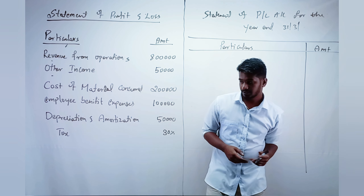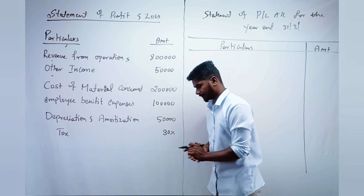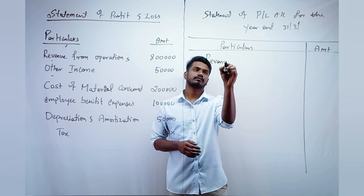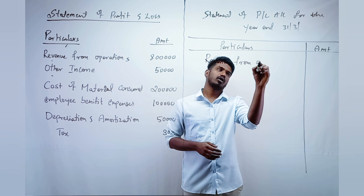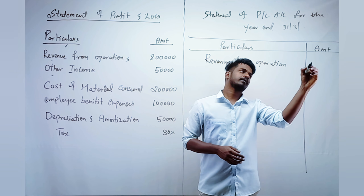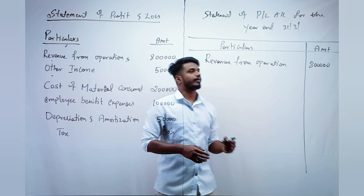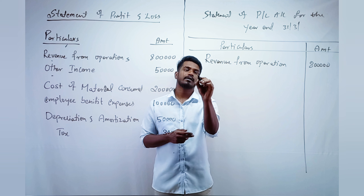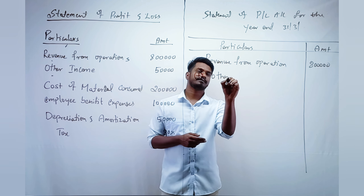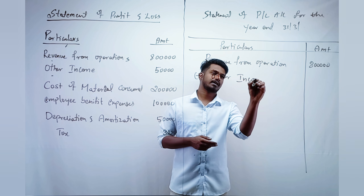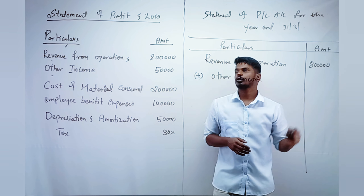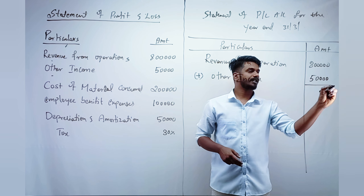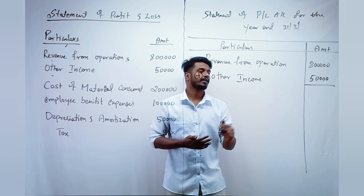Now draw the table with Particulars and Amount columns. The first item in the format is Revenue from Operations, which is given as 8 lakh rupees. Next, add Other Income — how much is given? 50,000. If there is no other income, just put a dash.